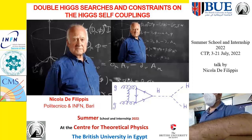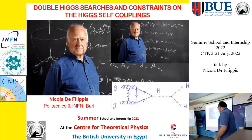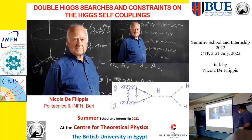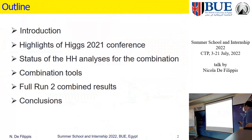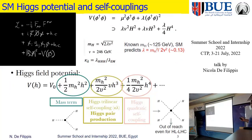Looking at the Lagrangian expansion, you can see the triple coupling and the quartic coupling. If you want to access the triple coupling, this is feasible. However, the quartic coupling is out of reach because the cross-section to produce four Higgs is much much lower than what could be explored. So we focus on the production of double Higgs and the measurement of the Higgs trilinear self-coupling.